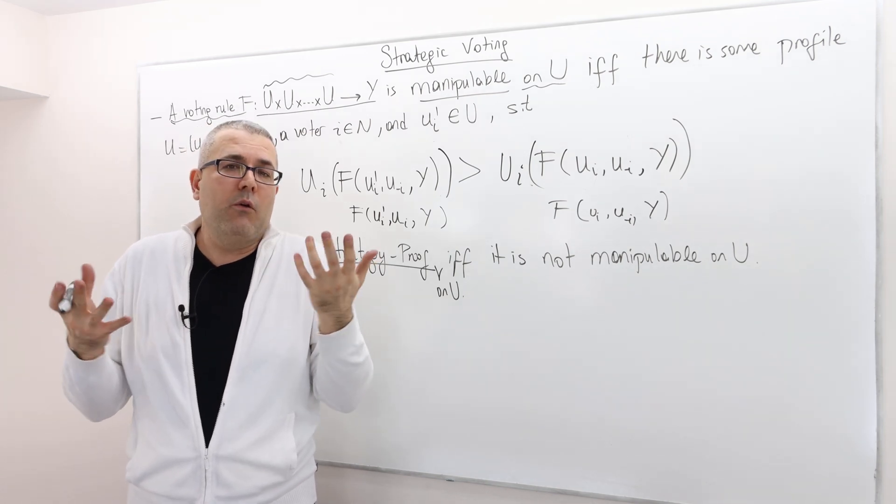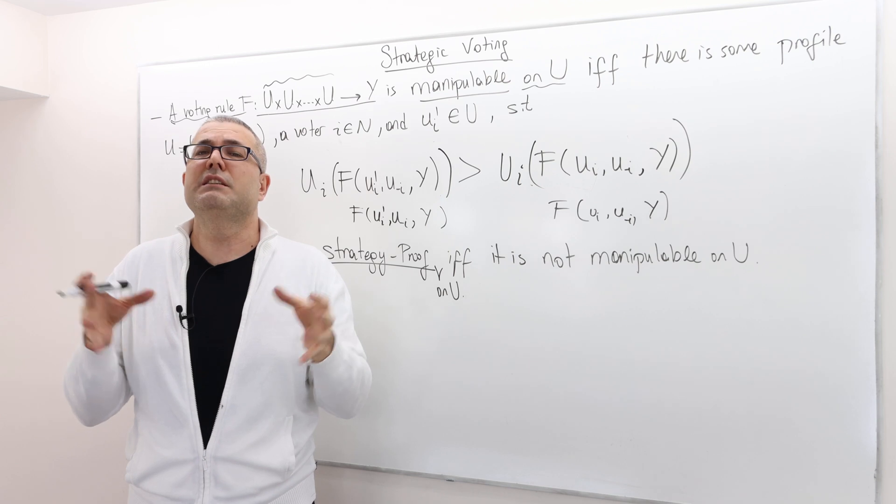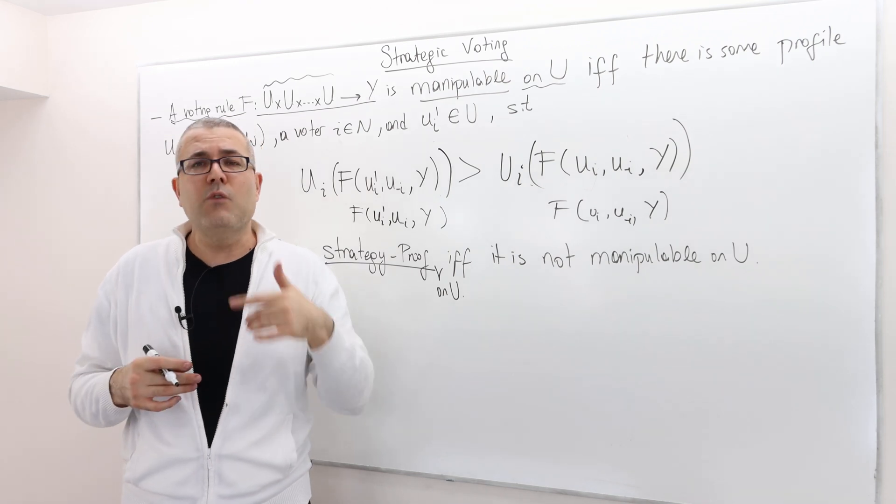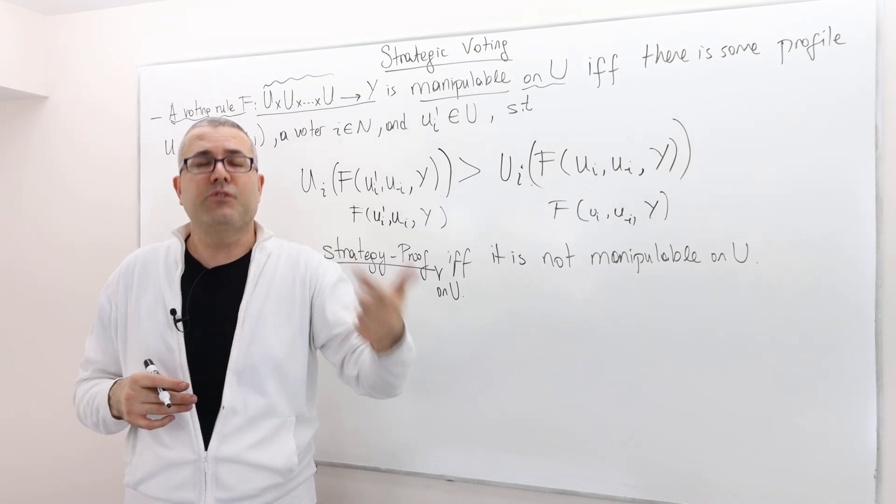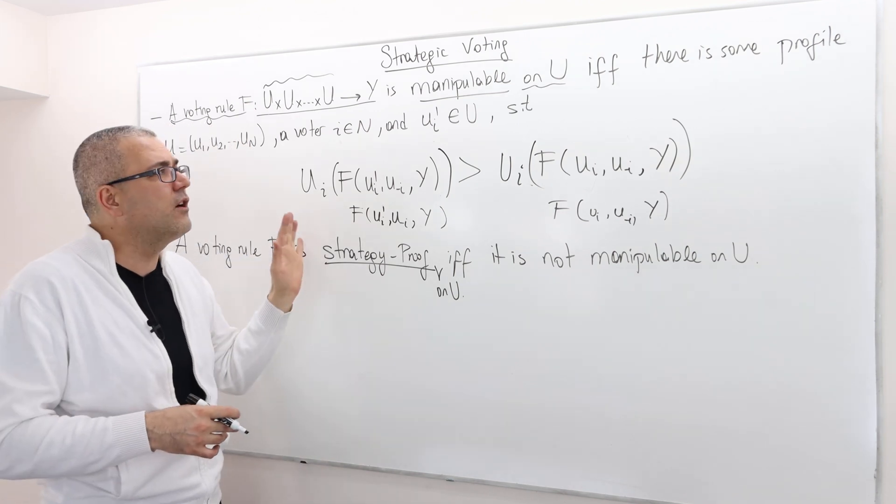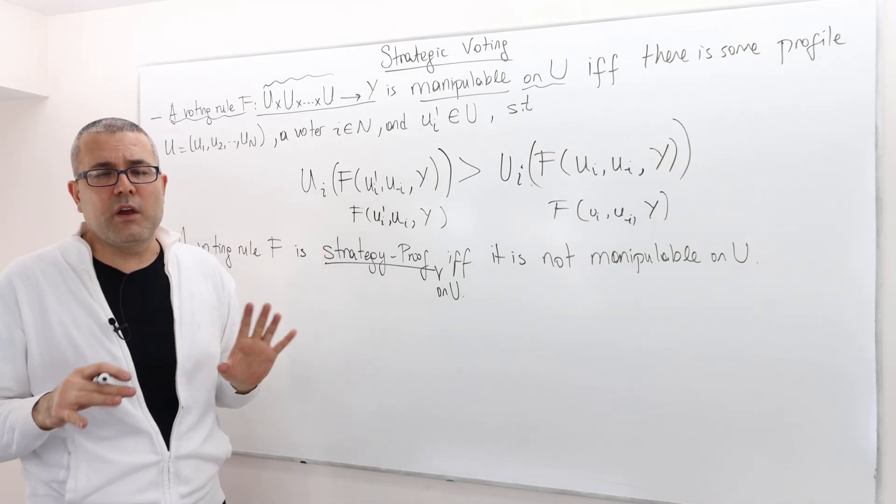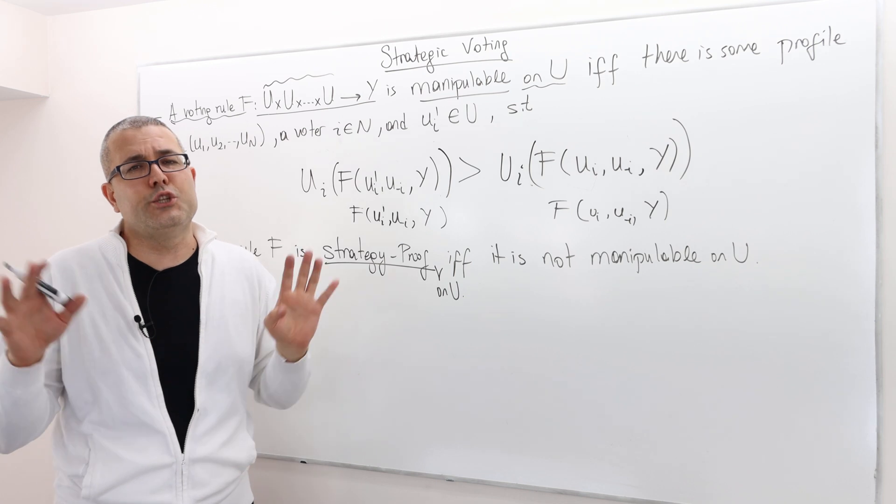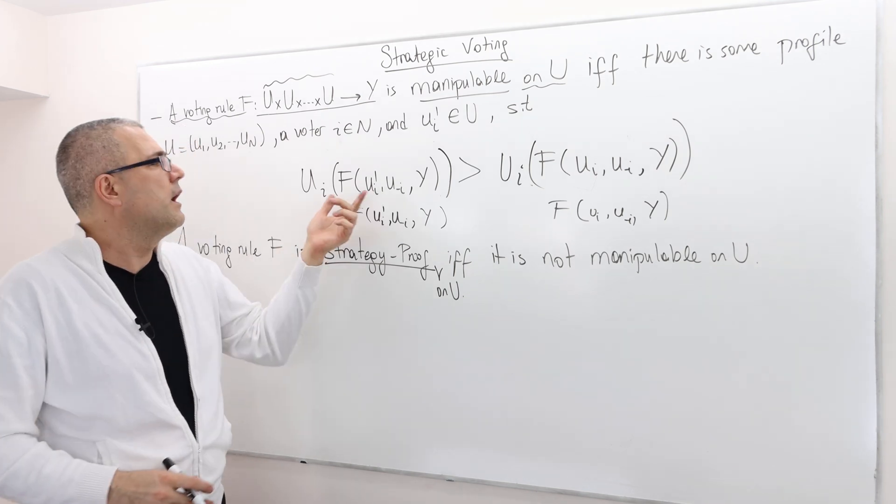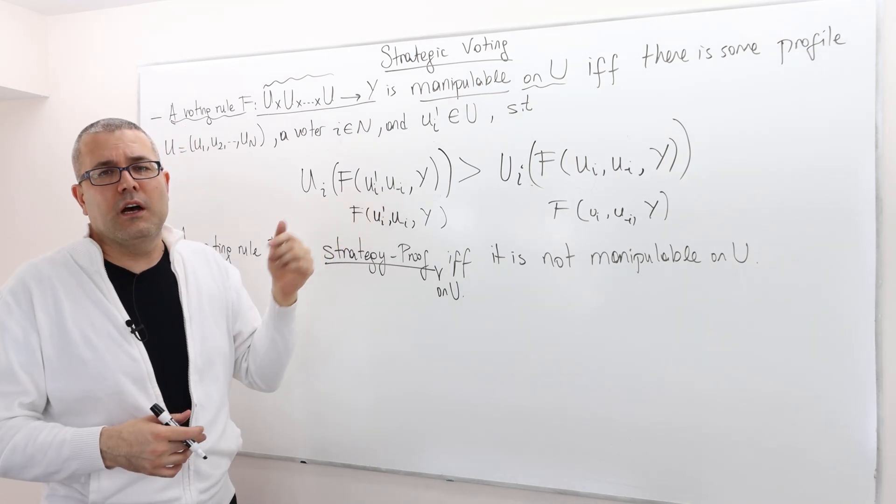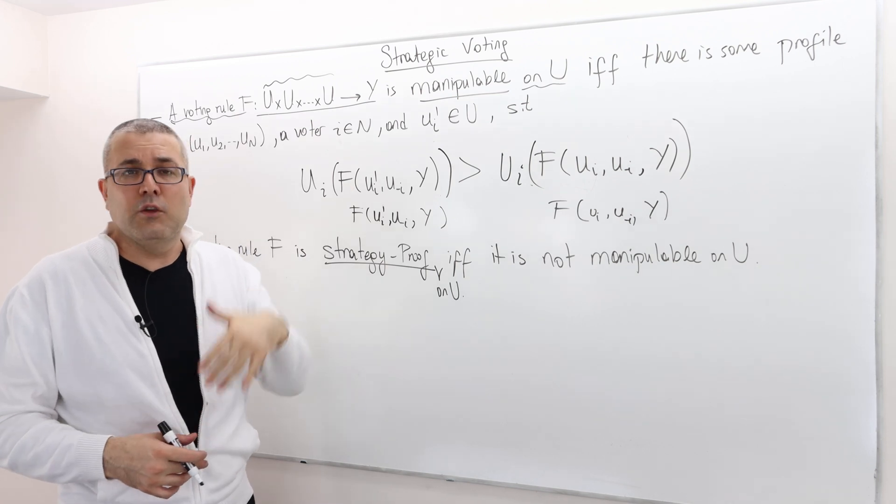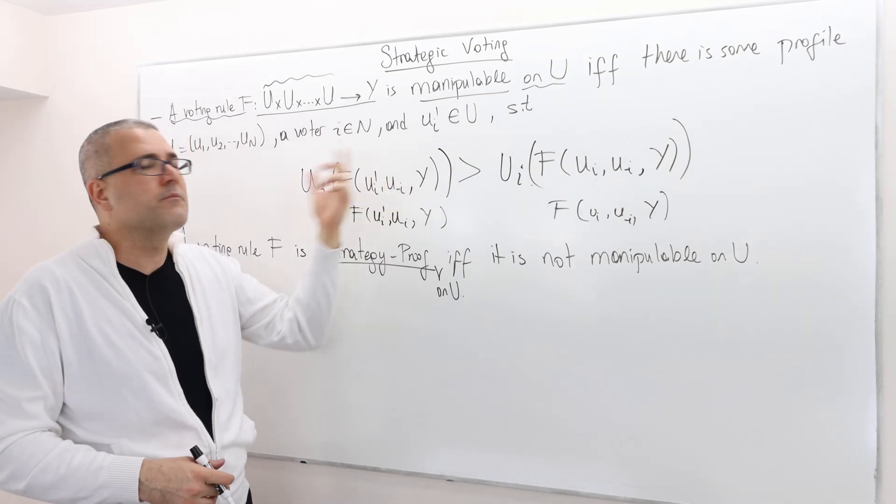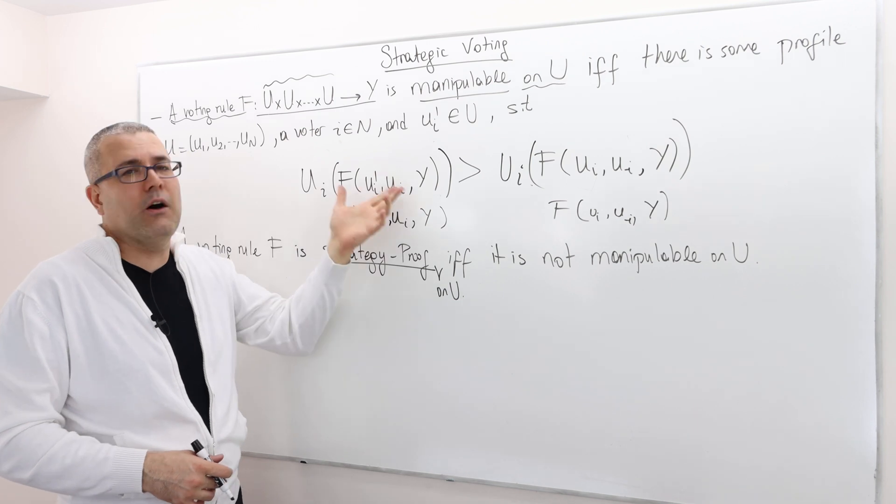All right. But when the number of voters is smaller, well, then one voters vote can actually change a lot of things. All right. So for that reason, think of this as a scenario where the number of voters is not too big. And so by changing your vote, you may actually change the outcome.